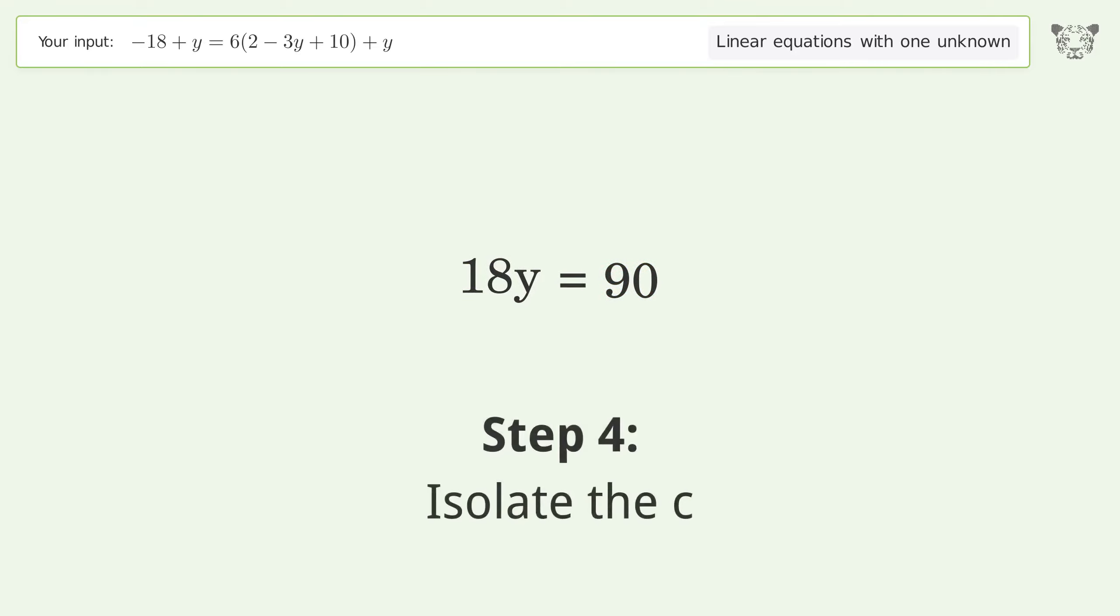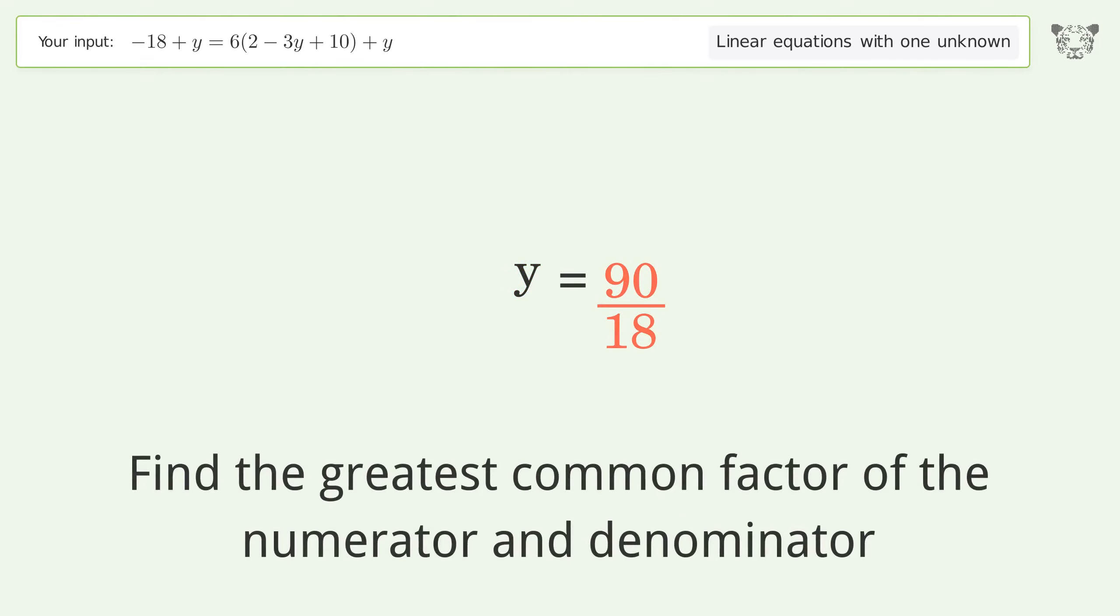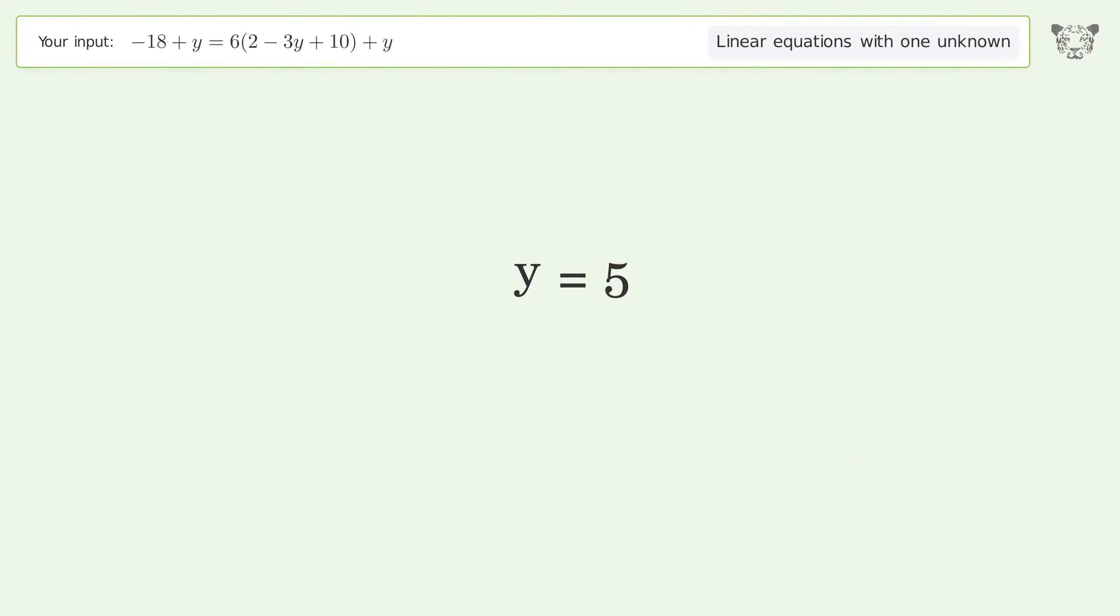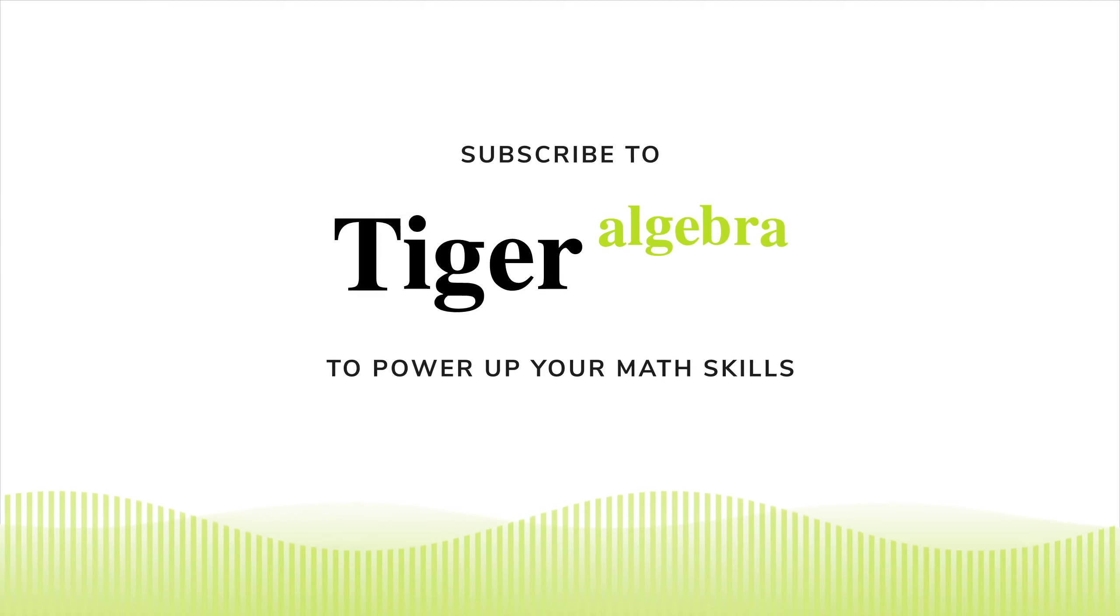Isolate the y. Divide both sides by 18. Simplify the fraction. Find the greatest common factor of the numerator and denominator. Factor out and cancel the greatest common factor. So the final result is y equals 5.